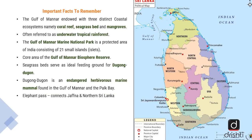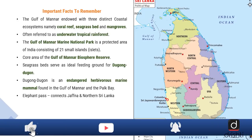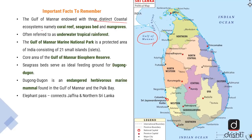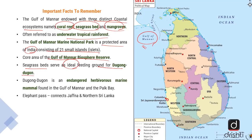Let us also look at some important geographic facts. The Gulf of Manar is a very important region, endowed with three distinct coastal ecosystems: coral reef, seagrass bed and mangroves. The Gulf of Manar is often referred to as the underwater tropical rainforest from a maritime perspective. The Gulf of Manar National Park is a protected area of India consisting of 21 small islands and is also a core area of the Gulf of Manar Biosphere Reserve. The seagrass bed serves as an ideal feeding ground for Dugong Dugong, an endangered herbivorous marine mammal found in the Gulf of Manar and the Palk Bay.